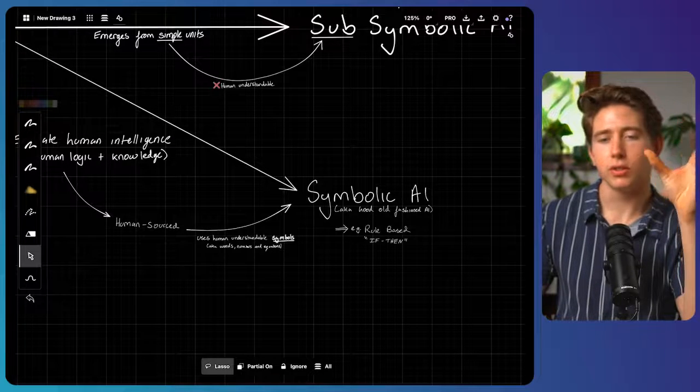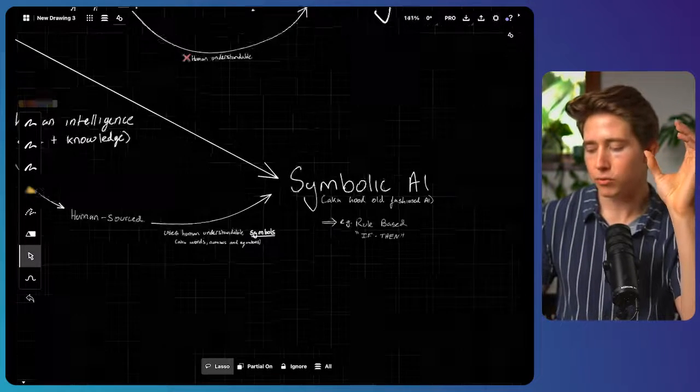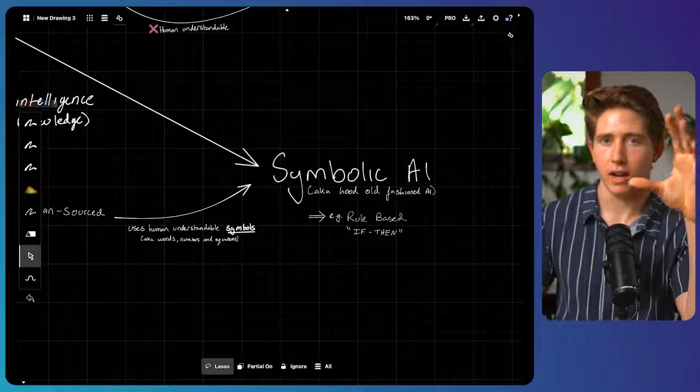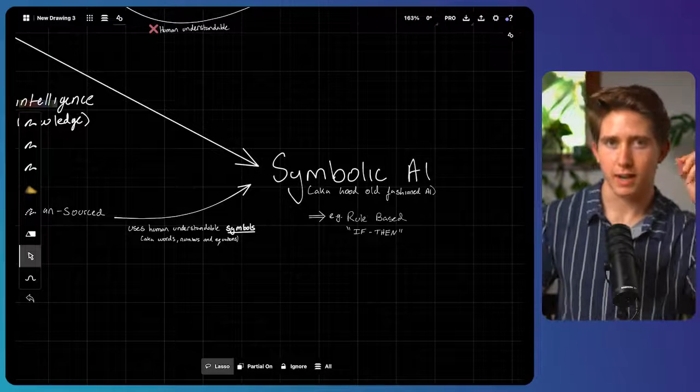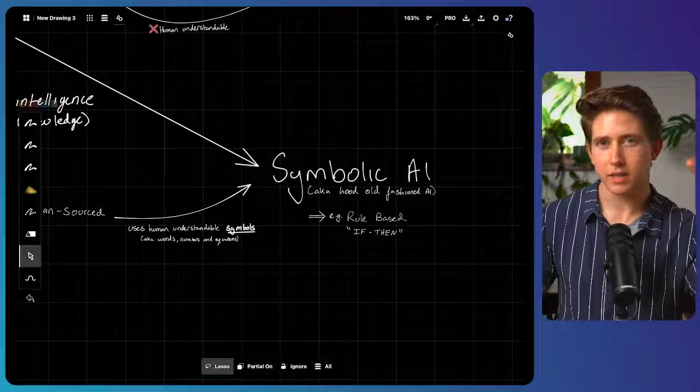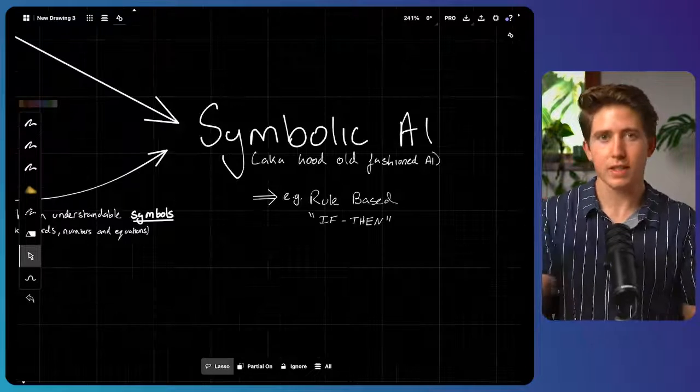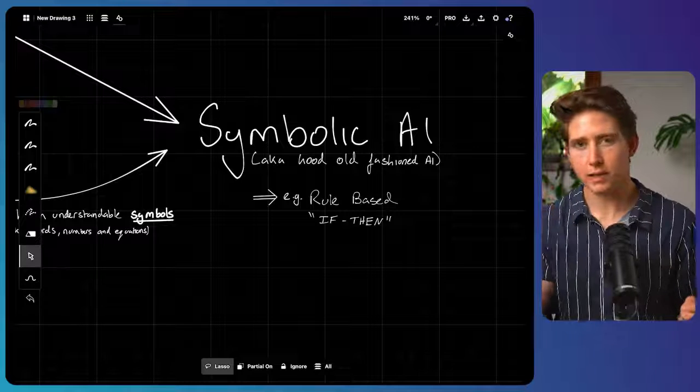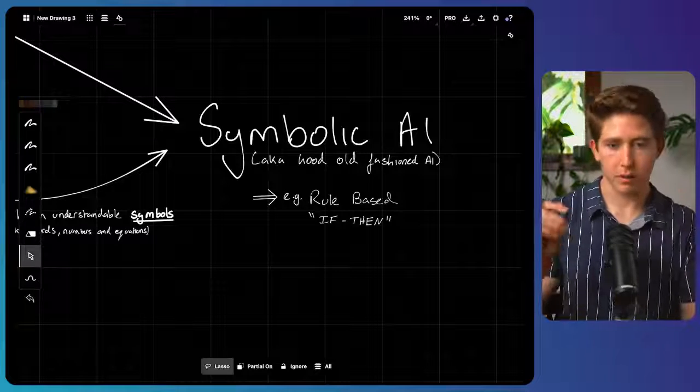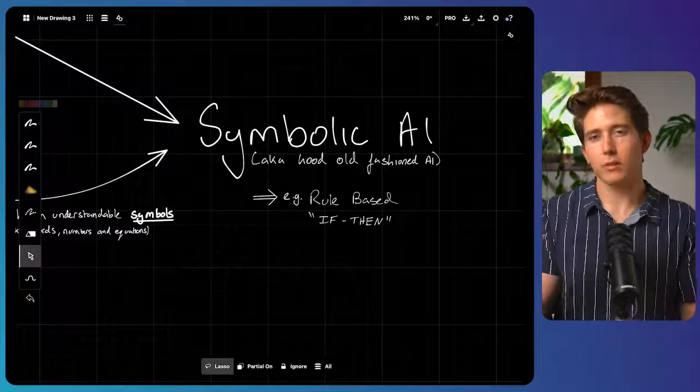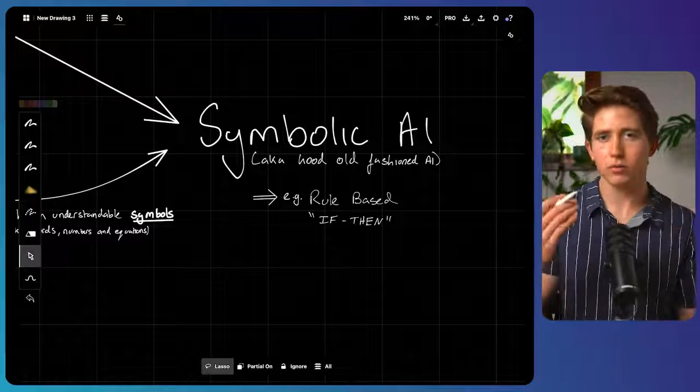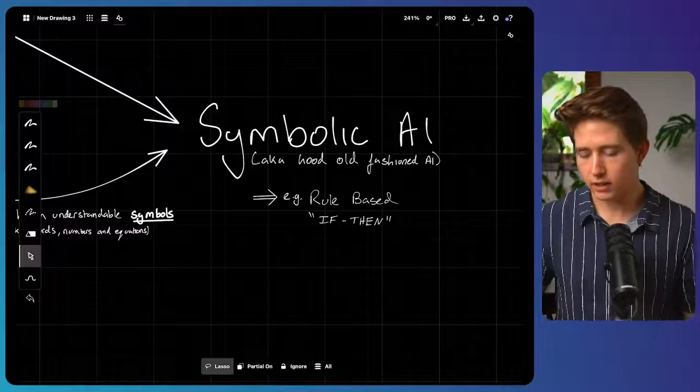It's also known as good old-fashioned AI. These are the really simple AIs that you've likely experienced back in the day when you saw some really basic chatbots. It's effectively the equivalent of like a BuzzFeed quiz. One example of this is a simple rules-based system where if X happens, then do Y. Although it may not sound that intelligent, it's still mimicking some level of intelligence.